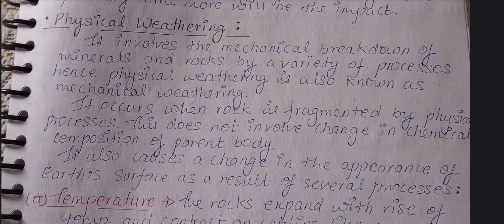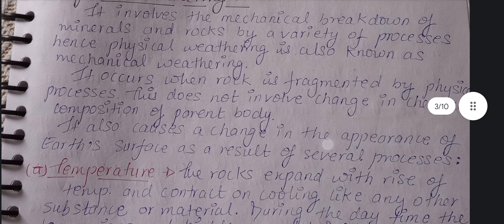This video covers physical weathering, one of the three basic types of weathering — physical, chemical, and biological. Physical weathering involves the mechanical breakdown of minerals and rocks by a variety of processes. It is also known as mechanical weathering. It occurs when rocks are fragmented by physical processes and does not involve any change in the chemical composition of the parent rock.